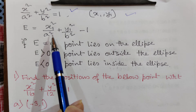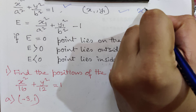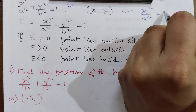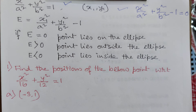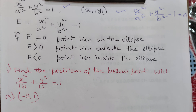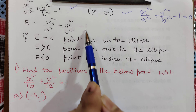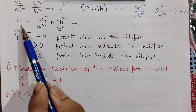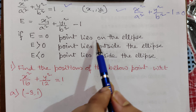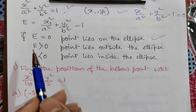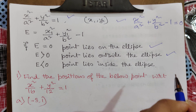Taking 1 to the left-hand side, we can write the expression as x squared by a squared plus y squared by b squared minus 1 equal to 0. Now substituting the point (x1, y1), we get E = x1 squared by a squared plus y1 squared by b squared minus 1. If E equals 0, the point lies on the ellipse; if E is greater than 0, the point lies outside the ellipse; and if E is less than 0, the point lies inside the ellipse.